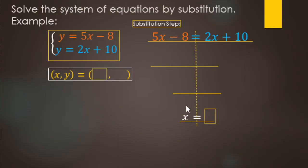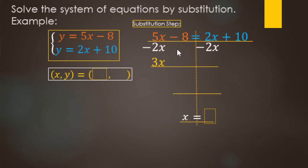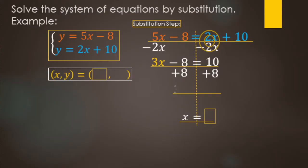We want the x terms on the left, but we have x's on both sides. So we transpose the 2x — we subtract 2x from both sides. Going from left to right: 5x minus 2x is 3x, we still have minus 8, and no more x's on the right — just positive 10. Now we have a two-step equation: 3x minus 8 equals 10. We undo the minus 8 by adding 8 to both sides, giving us 3x equals 18.